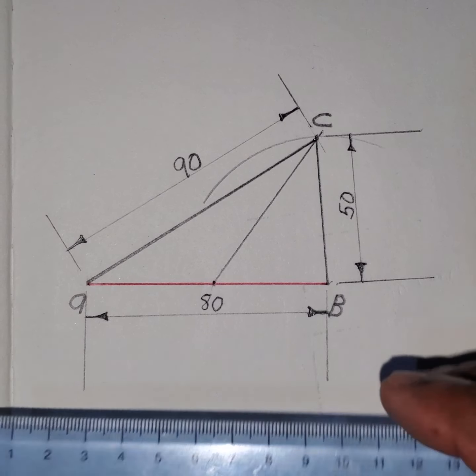Let us measure this one. This side is 90. Half of that is 45 which is here.